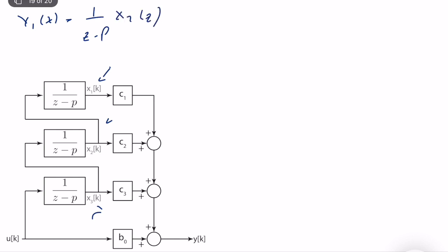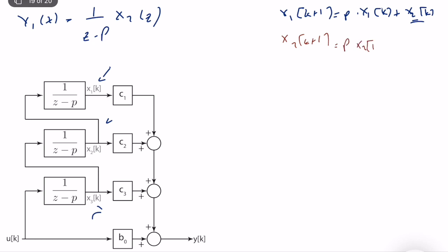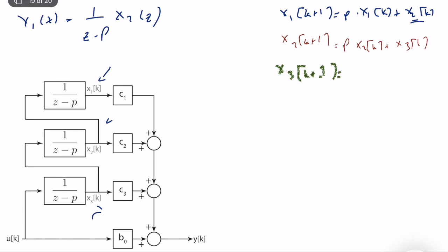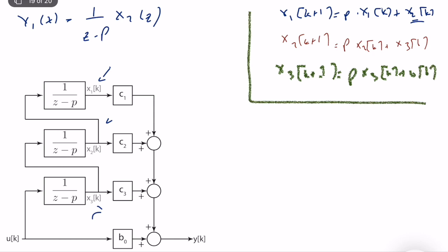Finding the difference equation, we can see that x1(k+1) equals p·x1(k) plus x2(k). This is similar to the diagonal block form, but instead of u we have x2(k). Similarly for x2: x2(k+1) equals p·x2(k) plus x3(k) — same p of course. And x3 is different because it has the input u(k), so x3(k+1) equals p·x3(k) plus u(k). All system equations are now computed.